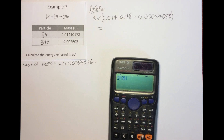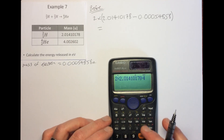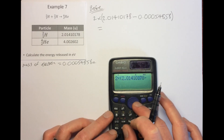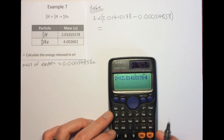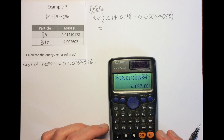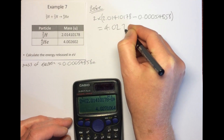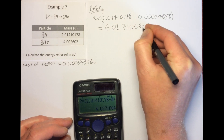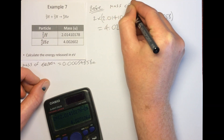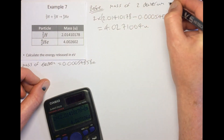So we calculate: 2 × (2.01410178 − 0.00054858), which gives us 4.02710640 u. That's the mass of our two deuterium nuclei — the mass of the reactants.